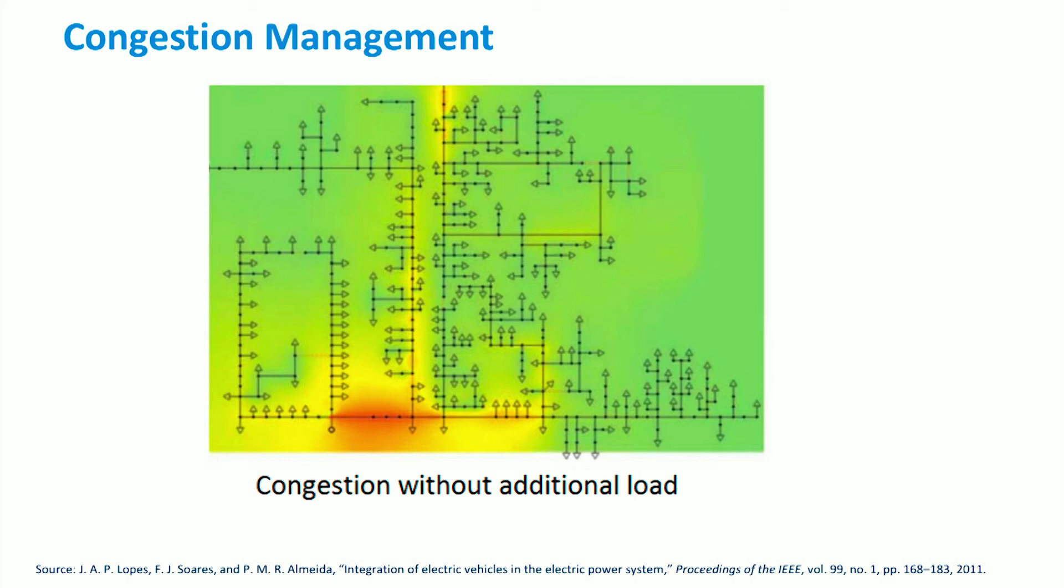The distribution feeder is characterized by the connection to the main grid, here on top of the figure, and by loads, like for example houses, represented by triangles.